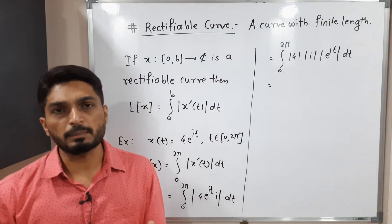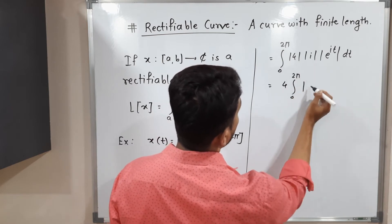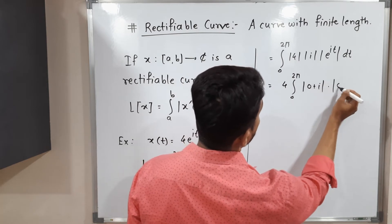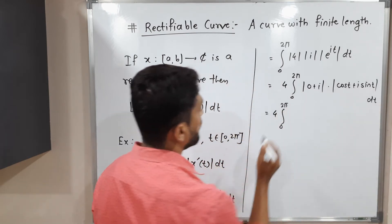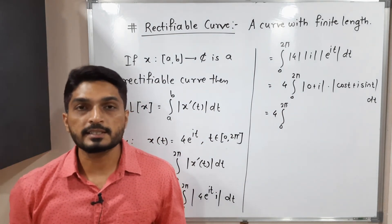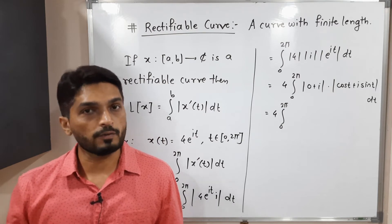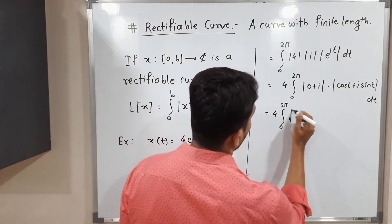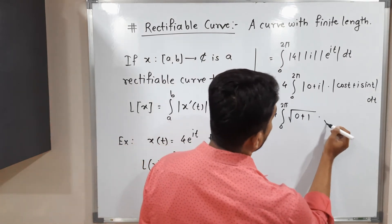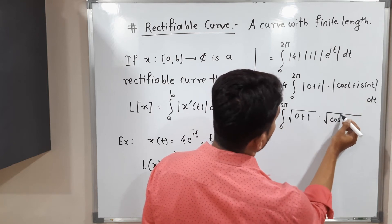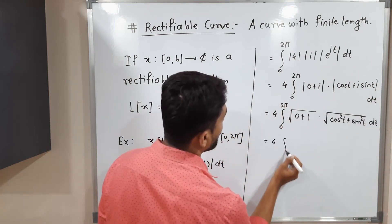We know that 4 is a positive real constant, so |4| = 4, which we take outside the integral. Now |i|: we write i as 0 + 1·i, so its mod is √(0² + 1²) = 1. For |e^(it)|, we express e^(it) = cos t + i sin t, so |e^(it)| = √(cos²t + sin²t).